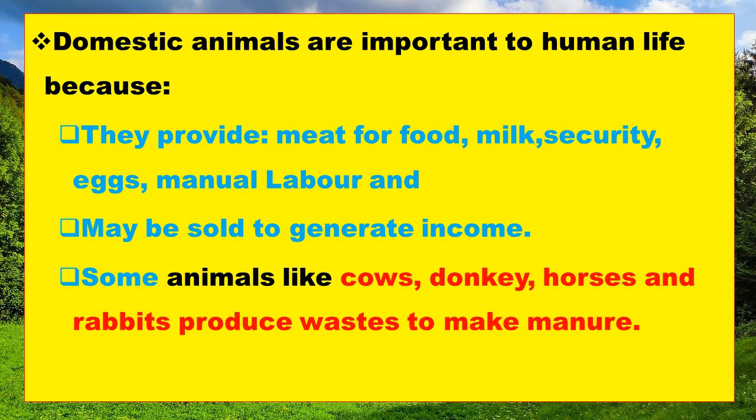Some animals like cow, donkey, horse, and rabbit produce waste to make manure. Manure is used for improving soil.